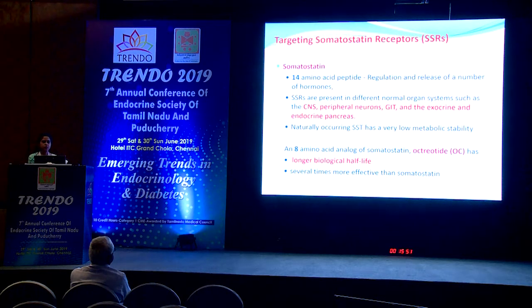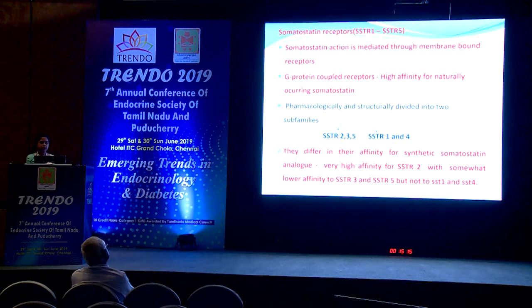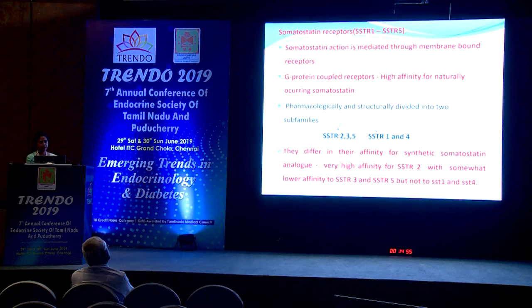Somatostatin is a naturally occurring peptide that regulates the release of many hormones, but has low metabolic stability in the body. A synthetic analog, octreotide, has been developed with a longer biological half-life and stability — approximately two hours versus two to three minutes for natural somatostatin. Somatostatin receptors are G protein-coupled receptors classified into five different groups. Octreotide has high affinity for somatostatin receptor type 2, with low affinity for types 3 and 5.